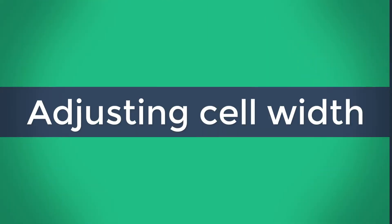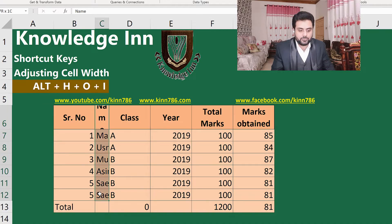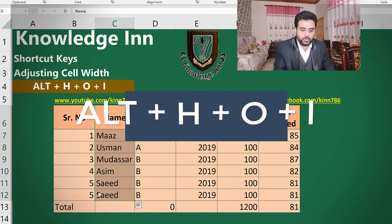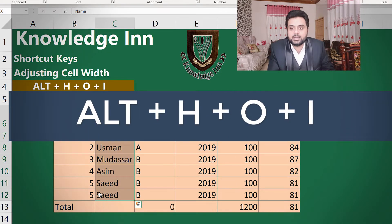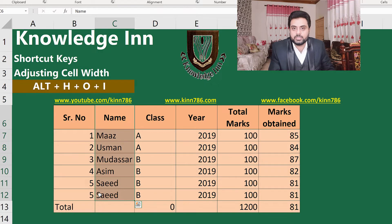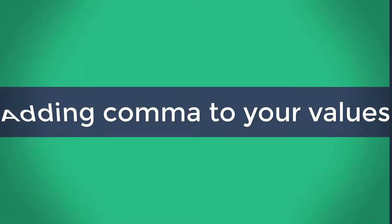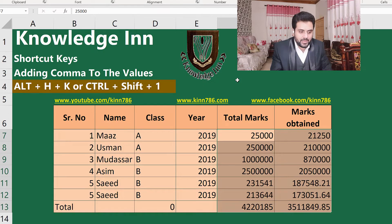Let's move to how to format the width of a column. If you have a very narrow width, select those cells where you want to apply the auto column width. The shortcut key is Alt+H+O+I — it will simply adjust your cell width according to the data present in those cells.